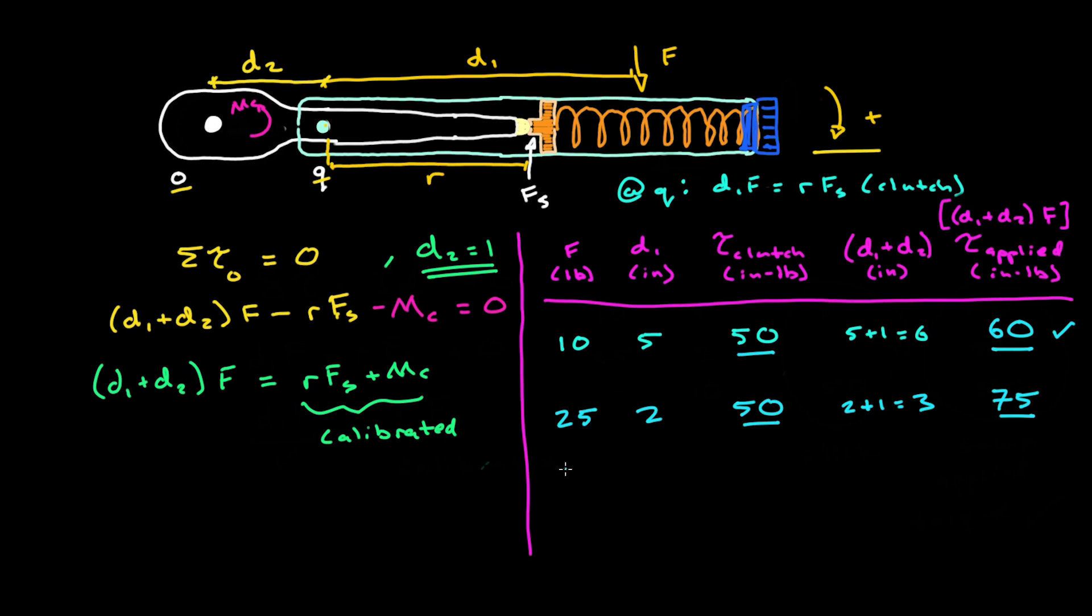Now, this of course works in the opposite direction as well. If we were to extend the handle and apply a smaller force of only five pounds at a distance of 10 inches, again, we still see an effective torque at the clutch of 50 inch pounds. And once again, the wrench will click, but critically, the actual applied torque at the socket is D1 plus D2 or 11 inches this time times the smaller applied force of five pounds for an applied torque at the socket of only 55 inch pounds. In every one of these cases, the wrench would have clicked because the torque experienced at the clutch was the same in all scenarios. But also, in every case, a different torque at the socket was actually applied. This took me a while to wrap my head around and even longer to find a good way to explain it, rigorously with actual math and physics, that is. But I think I finally see it, and I hope you do too.